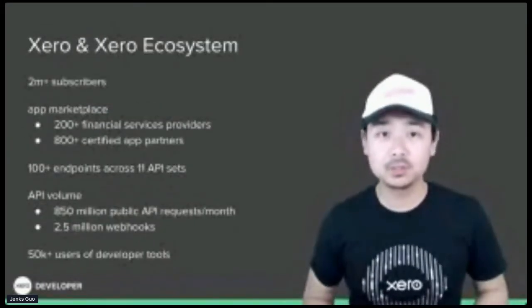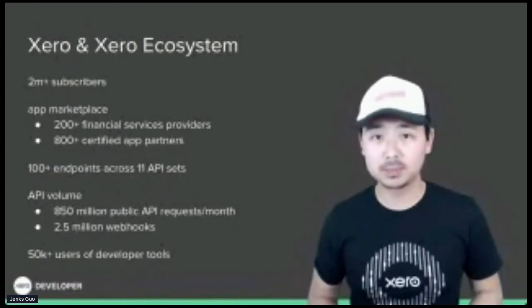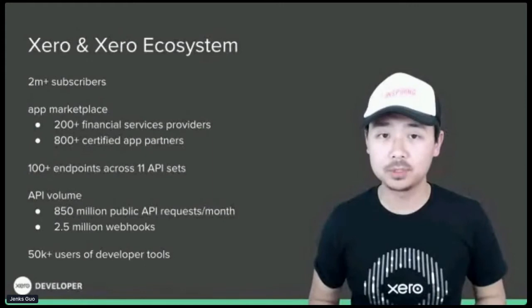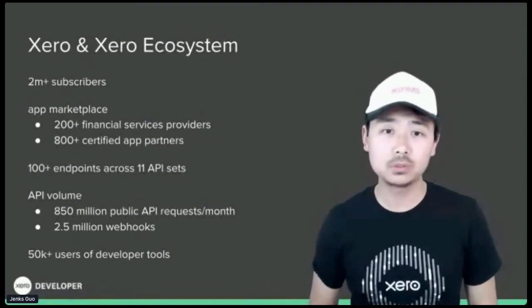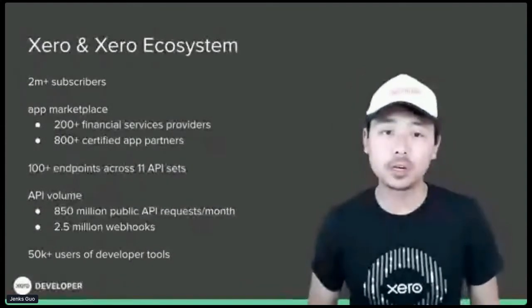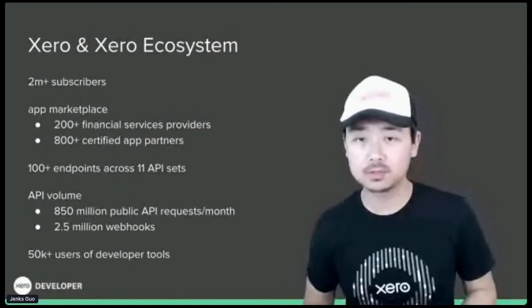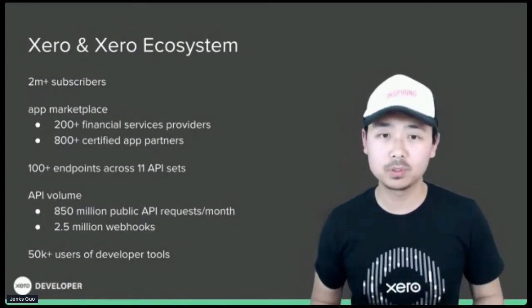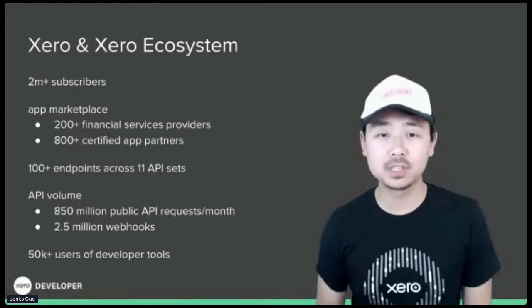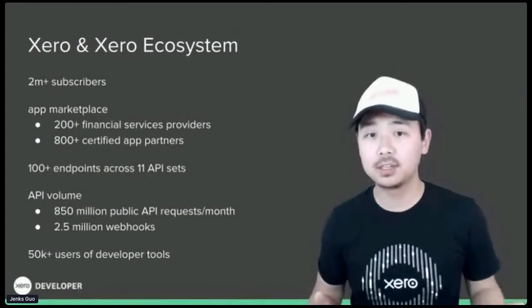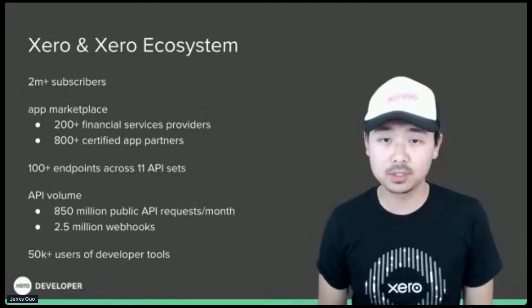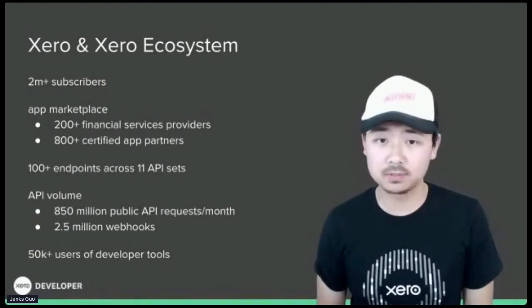I work for Xero. Xero makes beautiful accounting software for more than two million businesses around the world. Xero realized early on that just making beautiful software is not good enough — to be innovative and truly solve users' problems fast, you need to transform the software into a platform business where partnerships can be formed with financial services providers and other SaaS companies. Building the API platform is an important task because it is a driving force behind building up the business ecosystem. We have more than 200 financial services providers partnering with us and more than 800 certified app partners in our app marketplace.